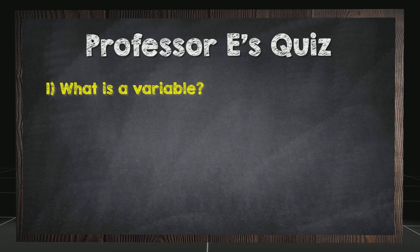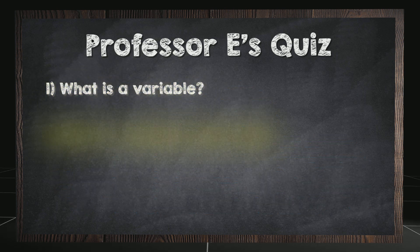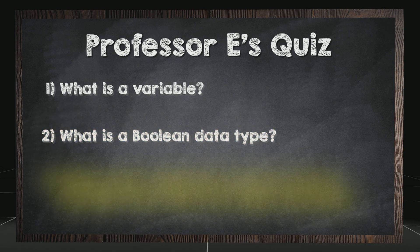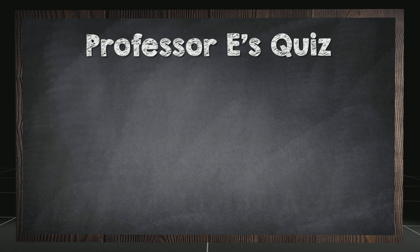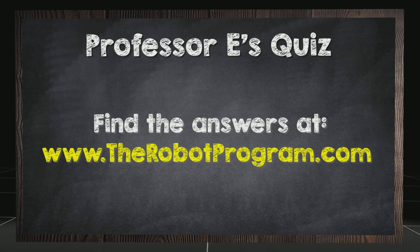What is a variable? What is a Boolean data type? Which logic statement can be used to provide more than two logic branches? Find the answers at therobotprogram.com.